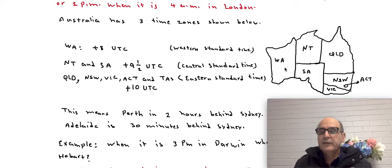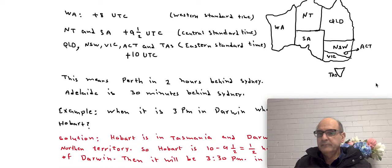Western Australian time is 8 hours ahead of Greenwich. So plus 8 UTC. Central Standard Time which is for Northern Territory and South Australia is 9 and a half hours ahead of Greenwich. And lastly we have Eastern Standard Time which is followed by Queensland, New South Wales, ACT and Victoria and also Tasmania.